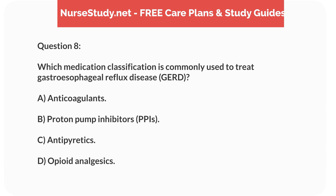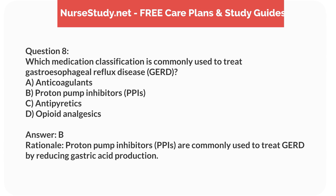Question 8. Which medication classification is commonly used to treat gastroesophageal reflux disease (GERD)? A. Anticoagulants. B. Proton pump inhibitors (PPIs). C. Antipyretics. D. Opioid analgesics. Answer: B. Rationale: Proton pump inhibitors (PPIs) are commonly used to treat GERD by reducing gastric acid production.